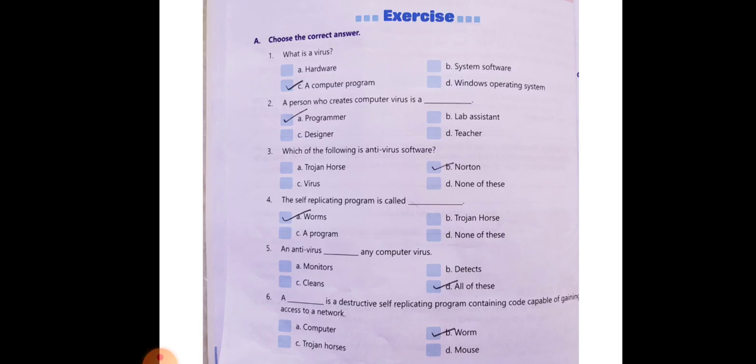Question 3, which of the following is an antivirus software? Antivirus softwares are the softwares which we use to protect our computer. So answer is B, option B.